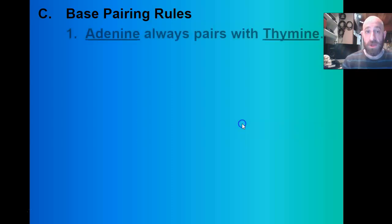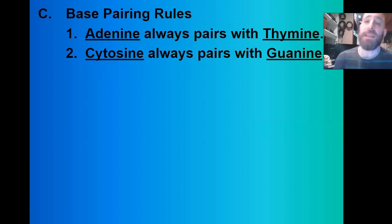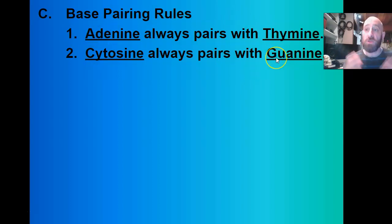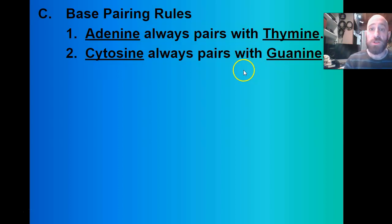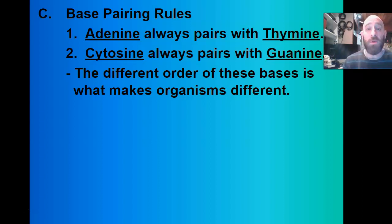Adenine always pairs with thymine and cytosine always pairs with guanine — that is because of their shapes. The way to remember it: C and G look very similar to each other, and the curved letters go together. Cytosine goes with guanine, adenine goes with thymine. The order of these bases is what makes organisms different — my DNA is 99% the same as yours, and the small differences are because the bases go in a different order.